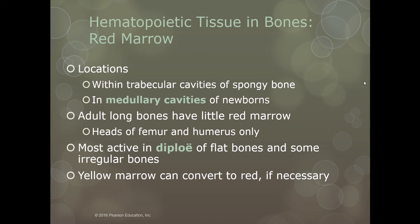Hematopoiesis is one of the things that takes place in our bones that is less obvious to most people. Hematopoiesis takes place in our red marrow. We find red marrow in the cavities of the spongy bone, and in the medullary cavities of newborns and very young children. The long bones of adults have very little red marrow — typically just in the heads of the femur and the humerus. Red marrow is most active in what we call the diploë, that sandwich space between the compact bone in the flat and irregular bones.